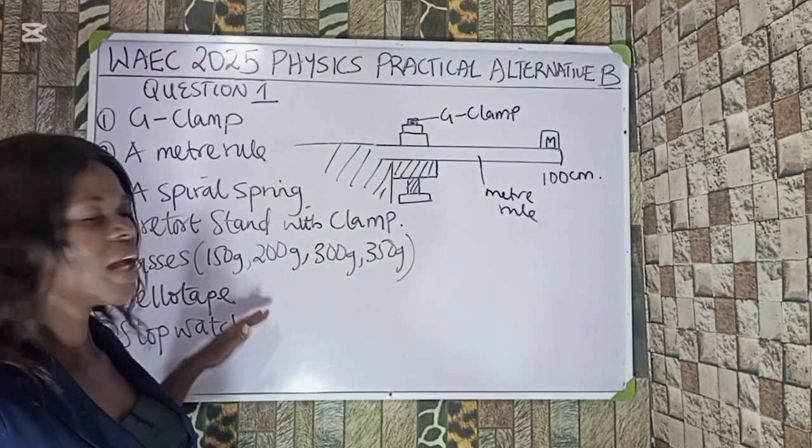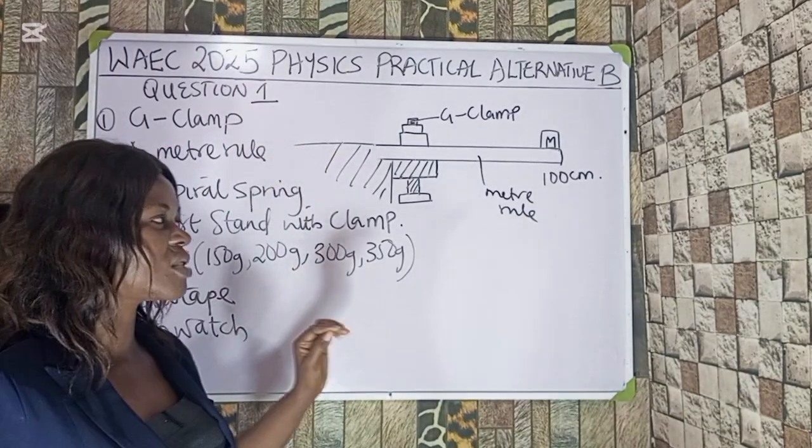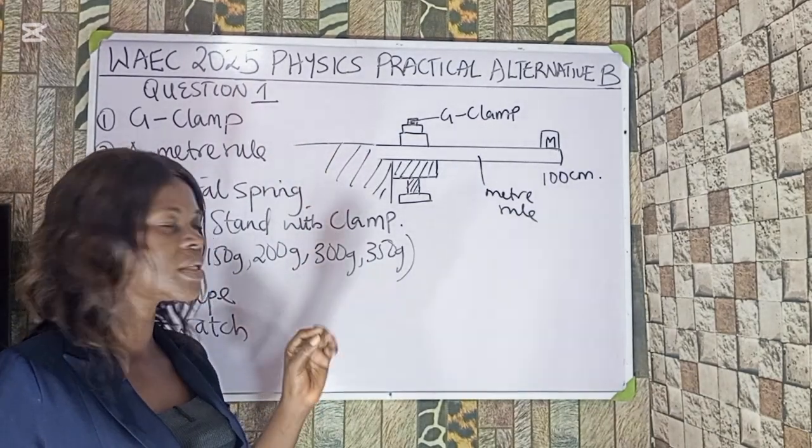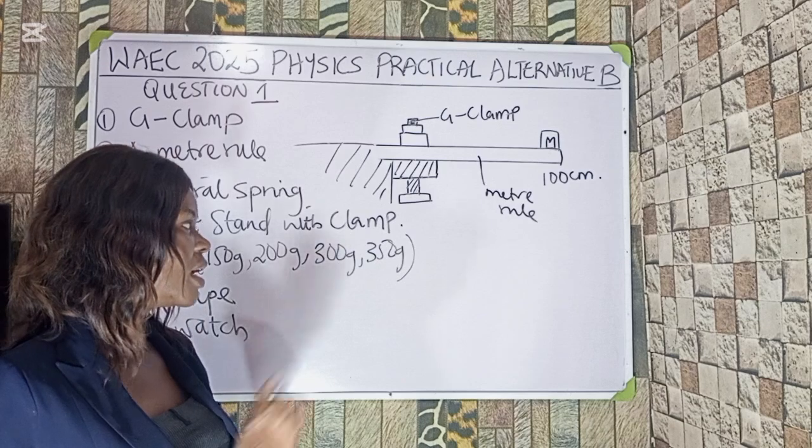With the help of the stopwatch, you are going to use it to check the time taken for the mass to complete 20 oscillations.